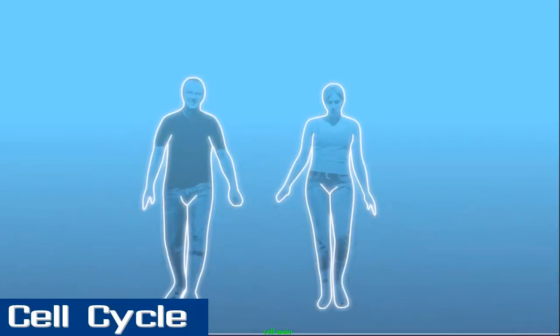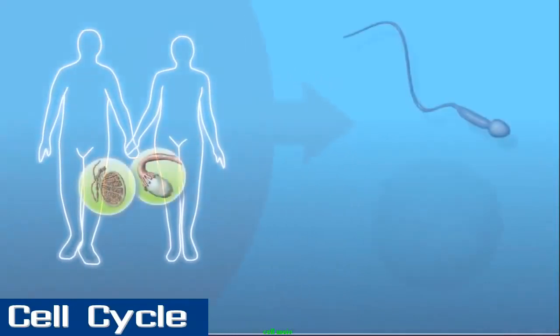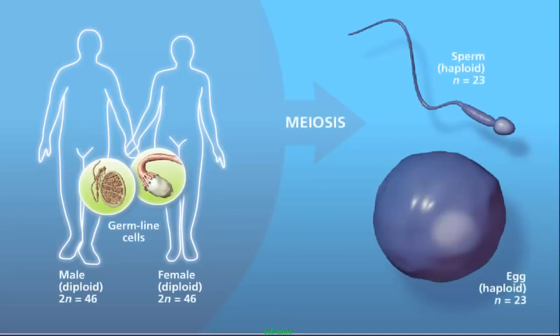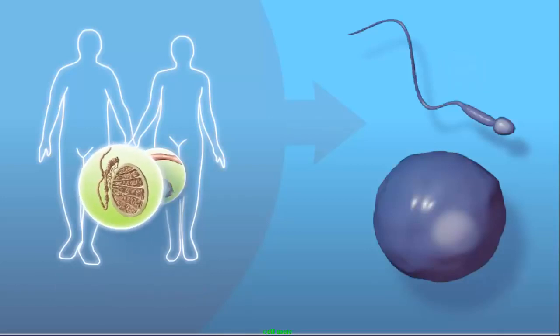Meiosis is the process by which haploid cells are produced from a diploid cell. For this to occur, the chromosomes must be correctly sorted and distributed in a manner to create genetically unique cells with half the number of chromosomes as the original cell.